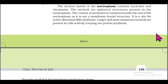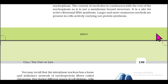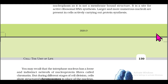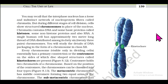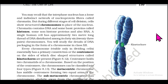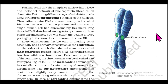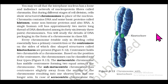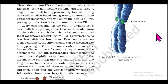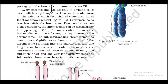The nucleolus is a site for active ribosomal RNA synthesis; larger and more numerous nucleoli are present in cells actively carrying out protein synthesis. The interphase nucleus has a loose and indistinct network of nucleoprotein fibers called chromatin, but during cell division, cells show structured chromosomes. Chromatin contains DNA, some basic proteins called histones, some non-histone proteins, and also RNA. A single human cell has approximately two meters of DNA distributed among its 46 (23 pairs) chromosomes.